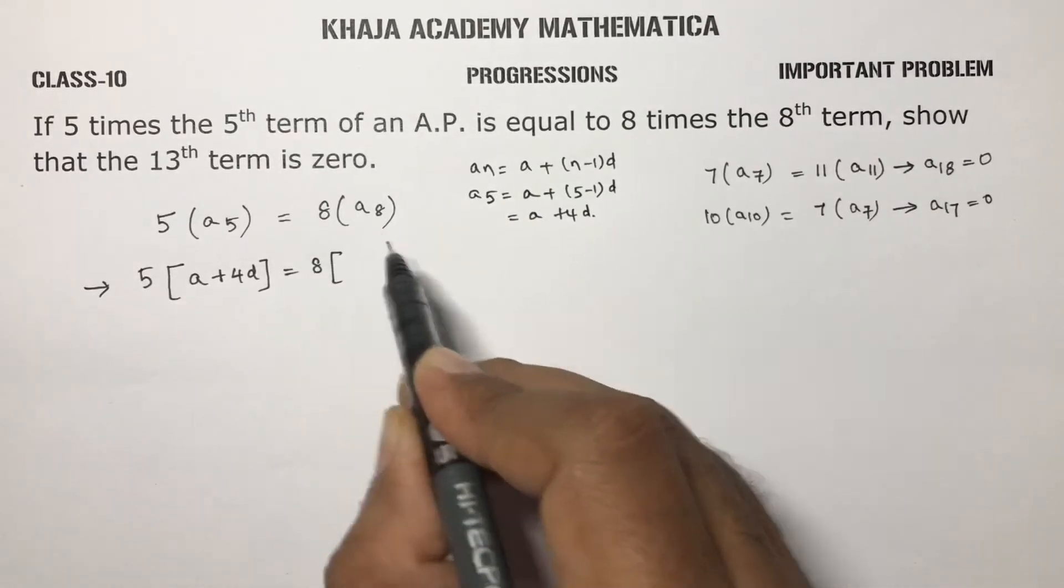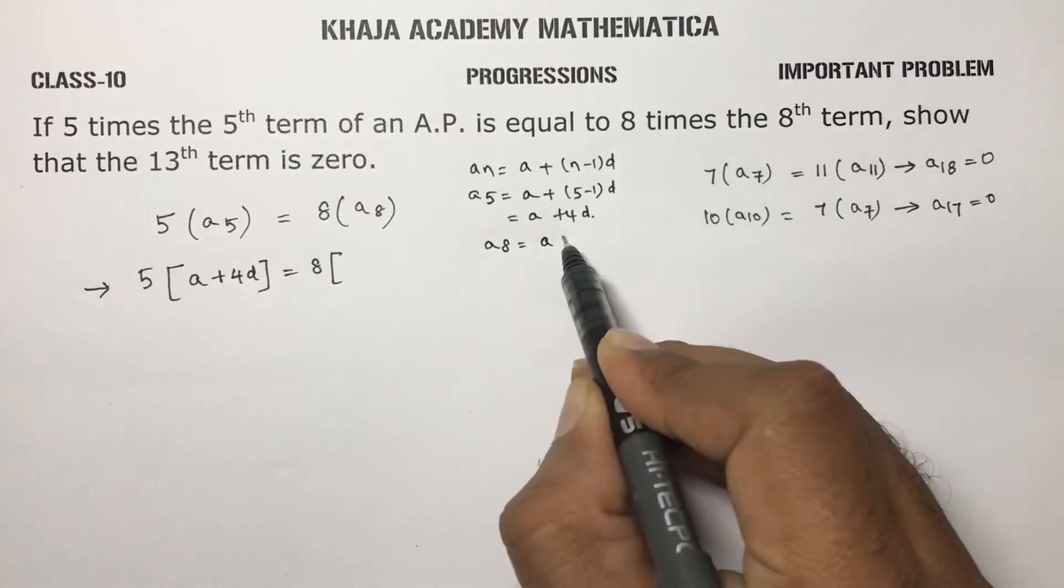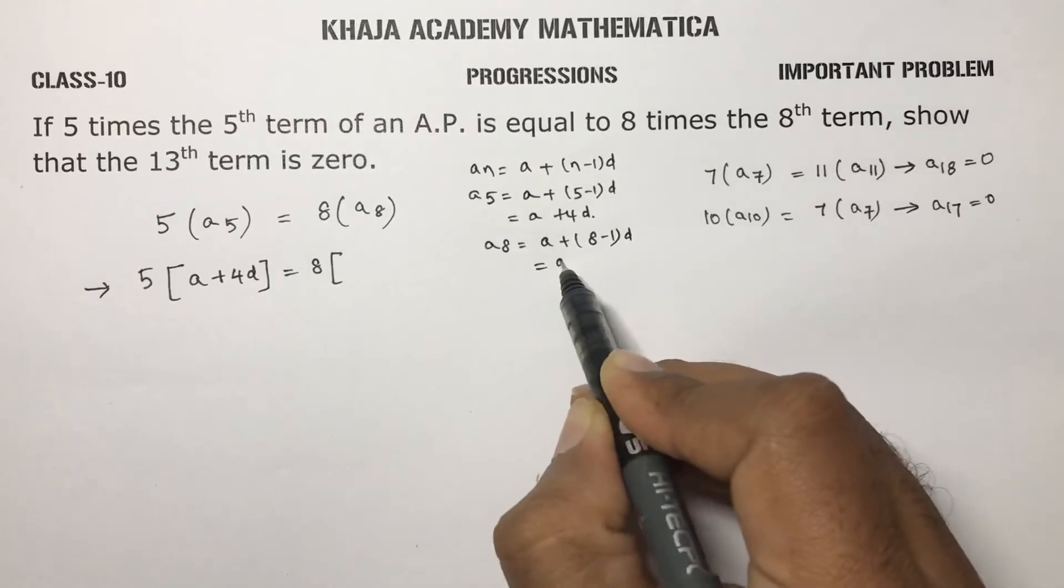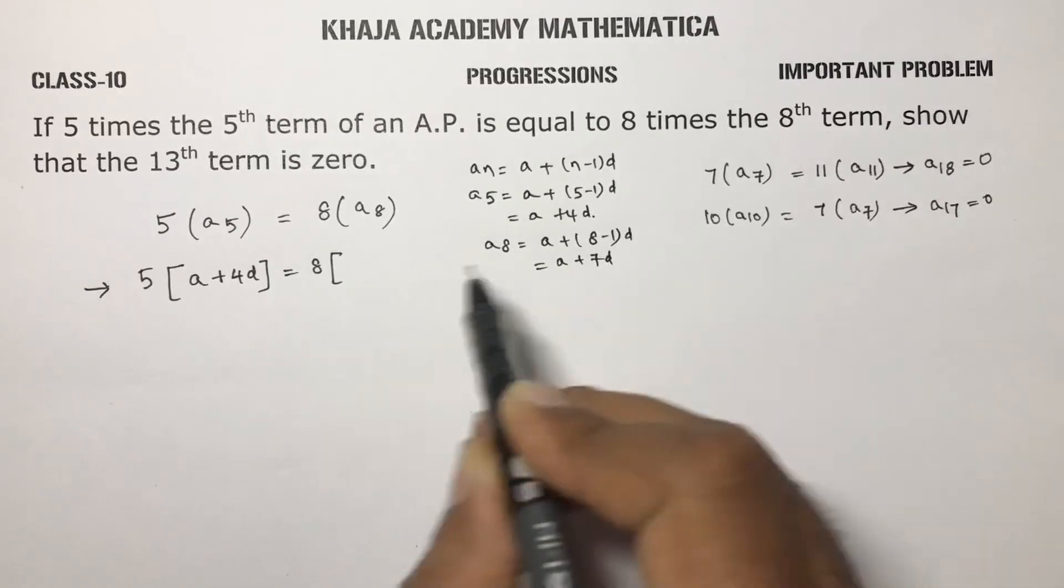8 times the 8th term. So the 8th term will become A plus N minus 1, 8 minus 1 into D. That is A plus 7D.